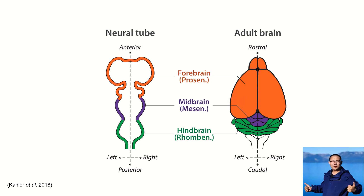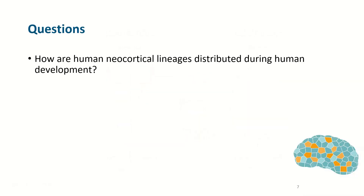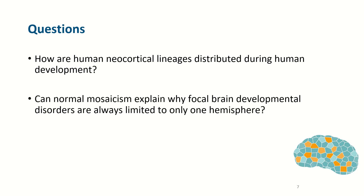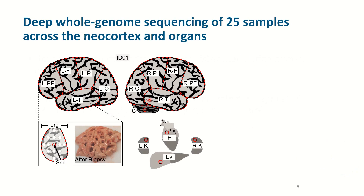This is previously thought that within the forebrain, an anterior-posterior establishment should come before the left-right cell migration differences. However, the distribution of neocortical lineages are completely unstudied during development, and this is one of the major scientific questions in our study. We also want to answer the question: can we use normal human development to explain the biological basis of how focal brain development disorders are restricted to only one hemisphere? To answer these questions, we designed a multi-dimensional sampling and dynamic study of post-mortem human samples in four individuals.